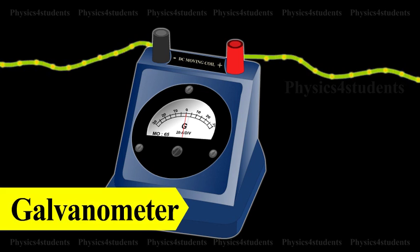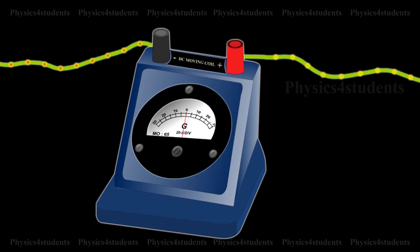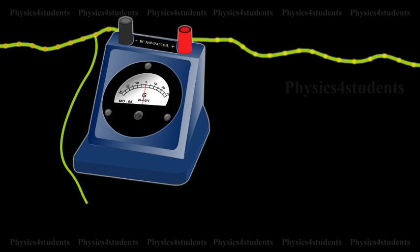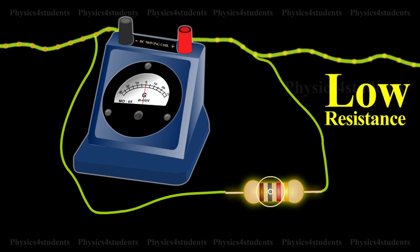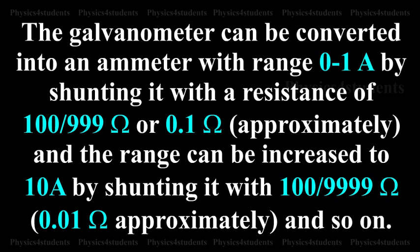The galvanometer is converted into an ammeter by shunting it with suitable low resistance, one for each range. For example, the galvanometer can be converted into an ammeter with range 0 to 1 ampere by shunting it with a resistance of 100 by 999 ohms or 0.1 ohm approximately. And the range can be increased to 10 amperes by shunting it with 100 by 9999 ohms, i.e. 0.01 ohms approximately, and so on.